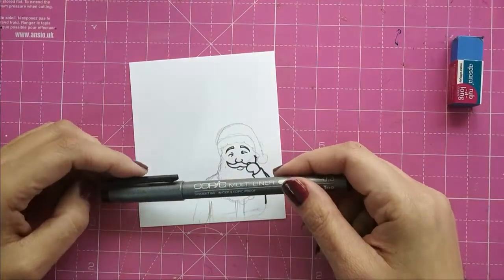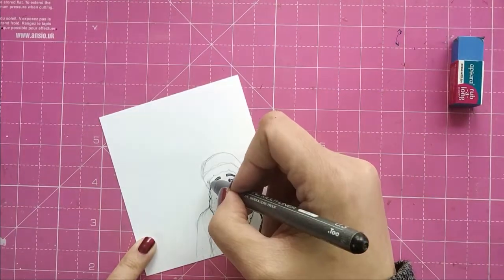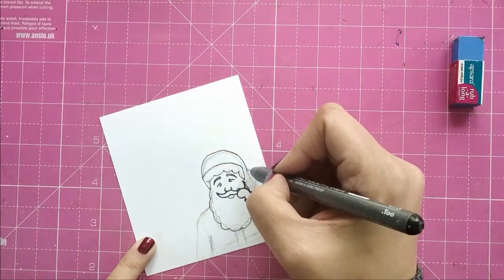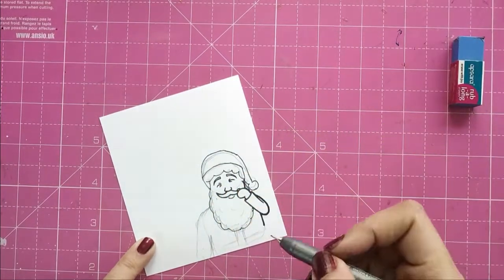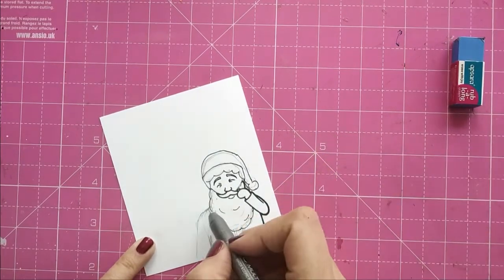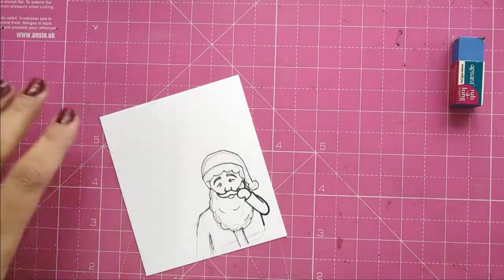When I was satisfied with how he looked, I take a Copic multiliner pen and trace over all my pencil markings. And now that I had the pen mark, I erase the marks of the pencil.